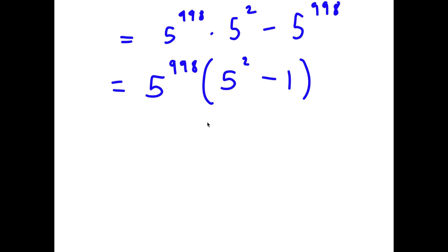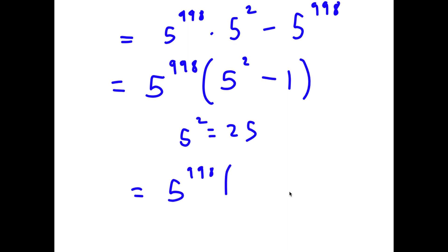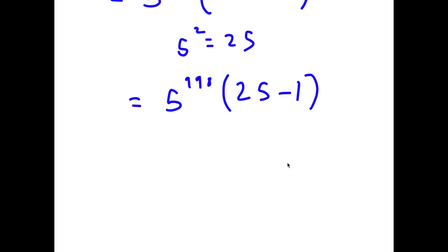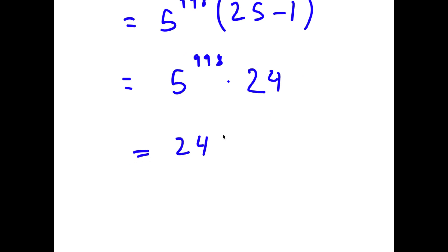Now to solve this, 5 squared is equal to 25. So now I have 5 to the power of 998 times 25 minus 1. Well, 25 minus 1 is simply 24. So I have 5 to the power of 998 times 24, or in a better format, 24 times 5 to the power of 998. This is my answer.